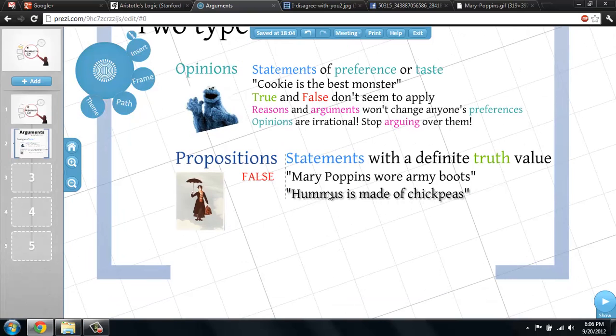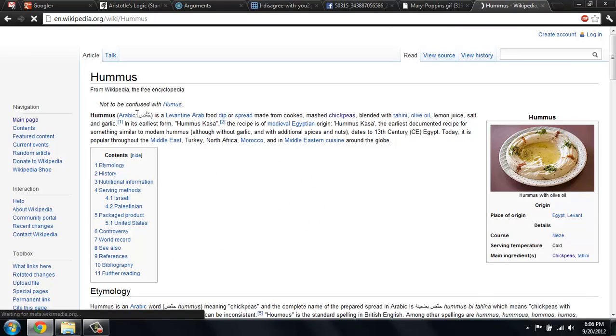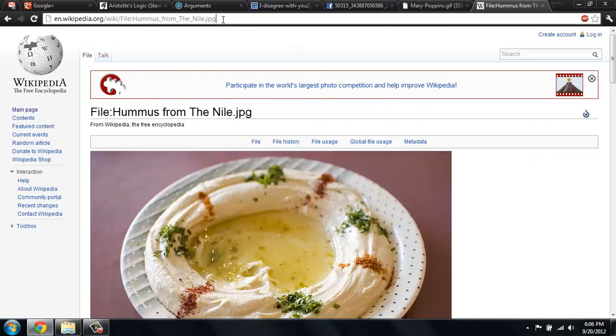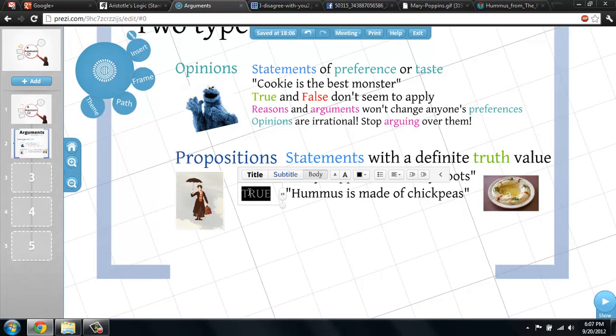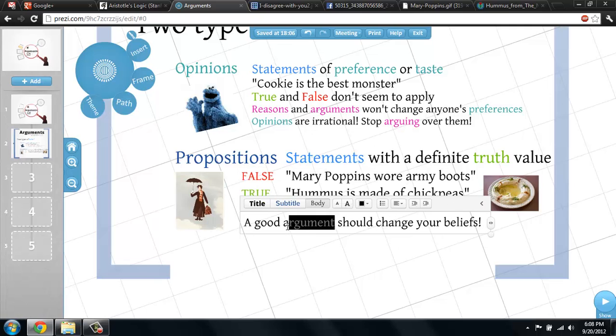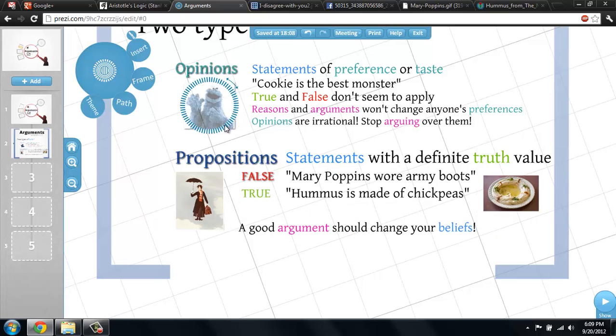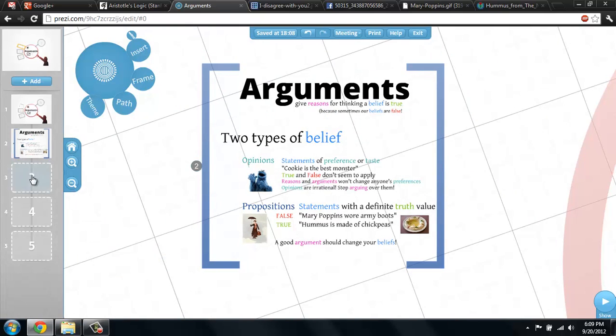Or I might have thought that hummus was made from gerbil vomit, but when I do the research and discover that hummus is made from chickpeas, I've discovered the truth of a proposition. This research should convince anyone else of the same. No matter what we thought before, discovering the truth gives us good reason for changing our beliefs. If arguments can demonstrate the truth of propositions, an argument might give us good reason for changing our beliefs too.